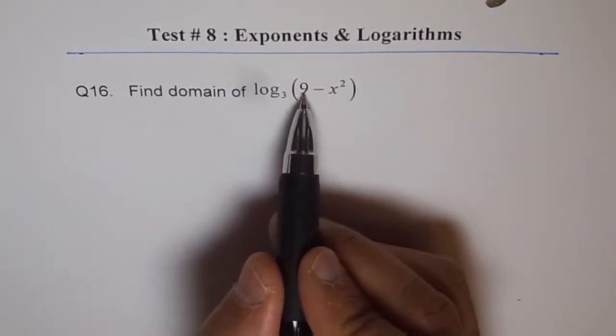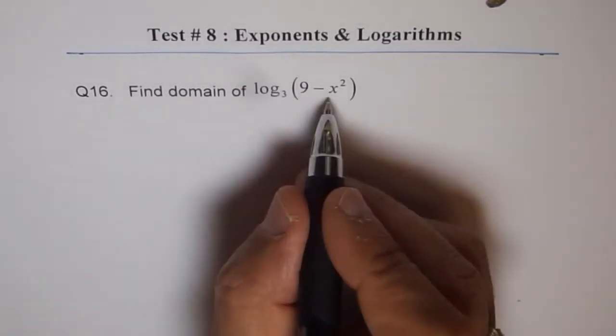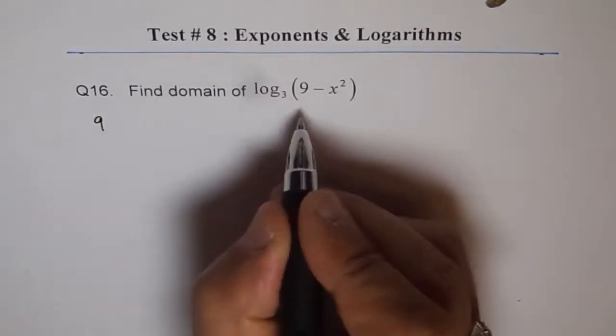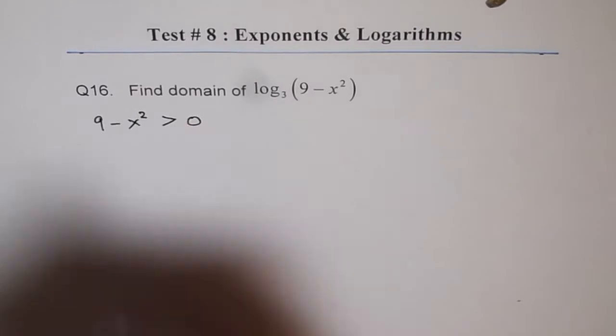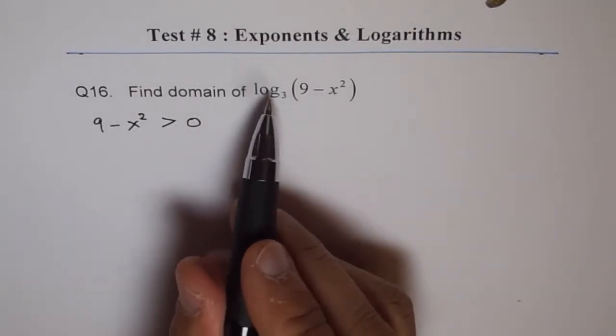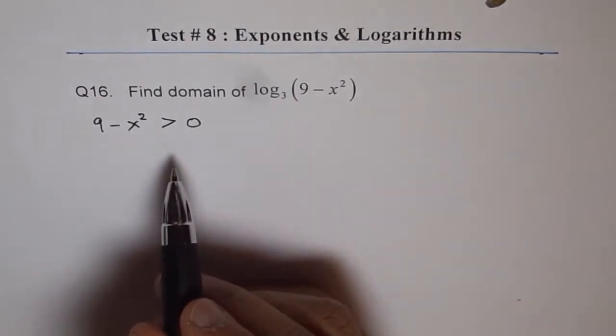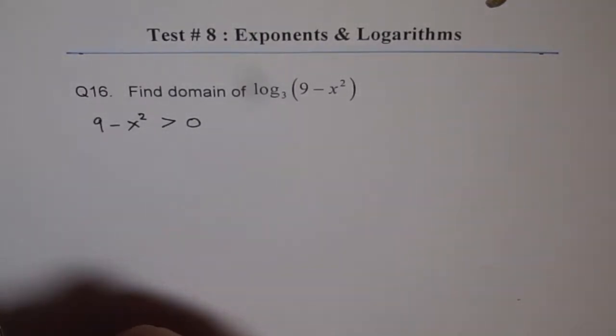Rather this should always be greater than 0. So when we want to find domain of the function, we are trying to say that 9 minus x square should be greater than 0. It cannot be 0 also. At x equals 0 you have a vertical asymptote for a log function normally. So that is the inequality which we need to solve.